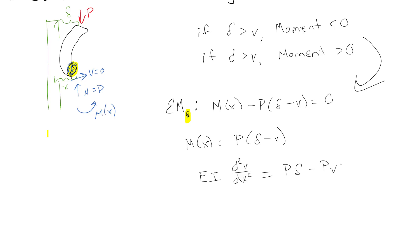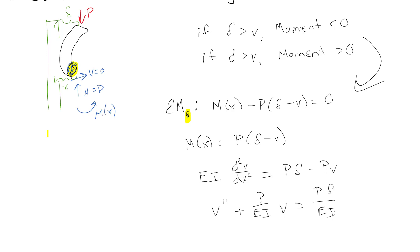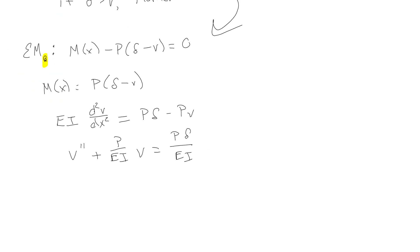Organizing things differently, we get: v double prime plus (P/EI)v equals P·delta/EI. Now remember last time we had a homogeneous second-order ODE, but now we have a non-homogeneous second-order ODE.